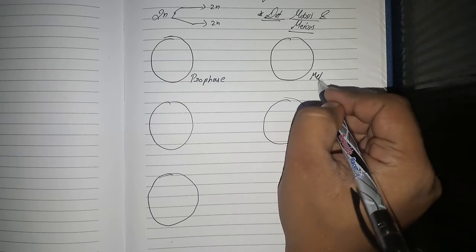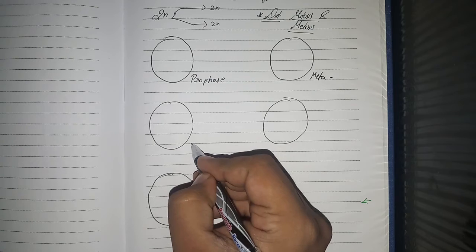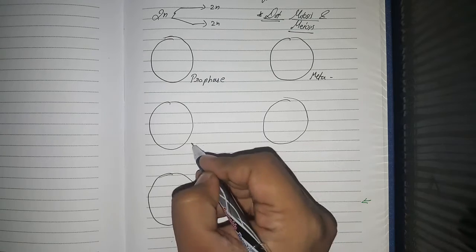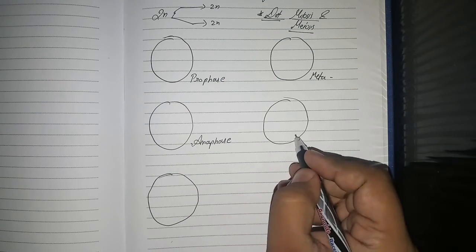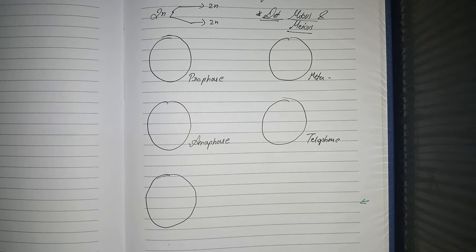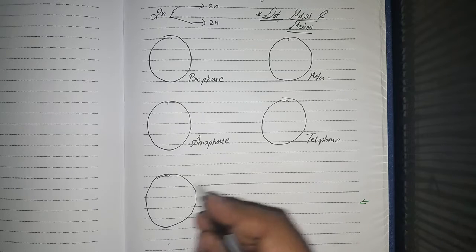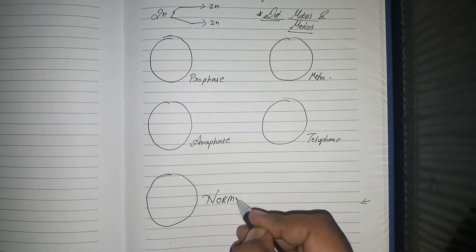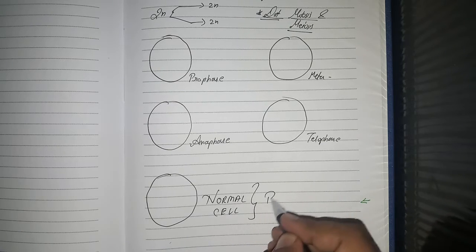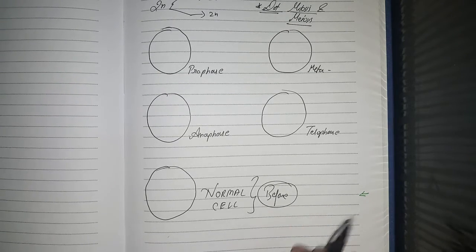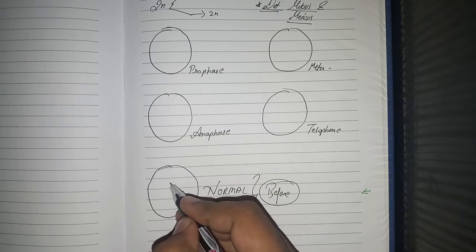The four phases of karyokinesis are: prophase, metaphase, anaphase, and telophase — pro, meta, anaphase, telophase. This is a normal cell before the process begins. I'm not drawing the cytoplasm; I'm concerned about the nucleus.